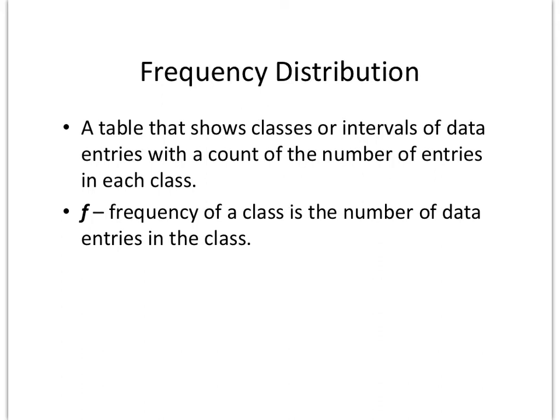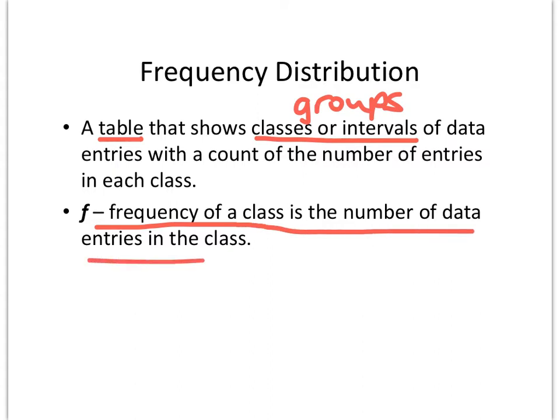A frequency distribution is a table that shows classes or intervals, another word for that could be groups, of data entries with a count of the number of entries in each class. So we're kind of tallying information. Frequency of a class is the number of data entries in the class.